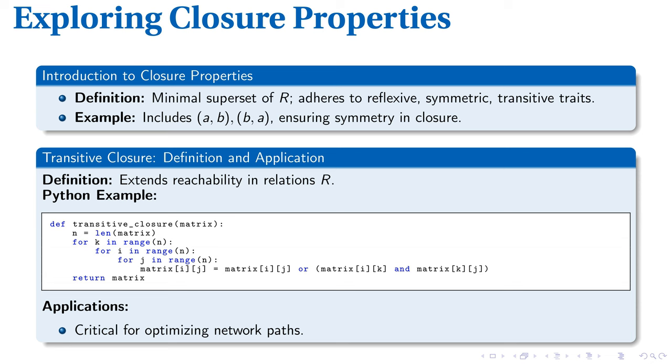Closure properties consist of traits that deal with a minimal superset of a relation R that strictly adheres to reflexive, symmetric, and transitive traits. Let's explore an example. Consider pairs such as (a,b) and (b,a). To ensure symmetry within the closure, these pairs are included within it. This reflects the basis of symmetry in closure properties. If a relation runs from A to B, there's a mirrored relation from B back to A.